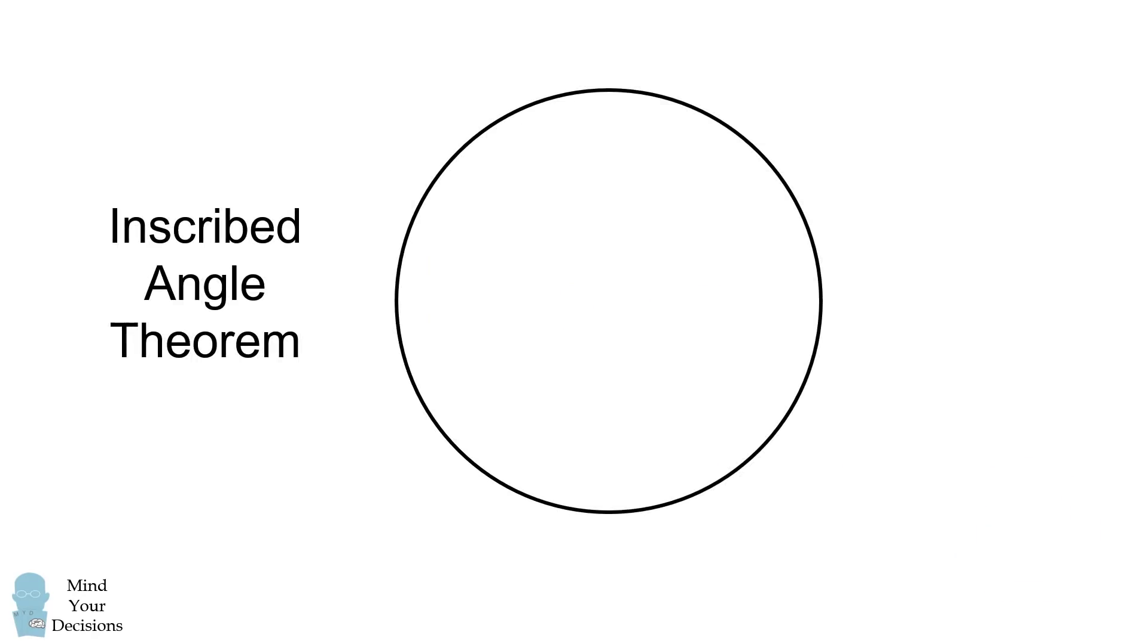There are many ways to solve the problem, but I will use the inscribed angle theorem. If an angle is inscribed in a circle and has a measure equal to theta, then the arc it subtends will be equal to 2 theta. We'll use this to solve the problem.